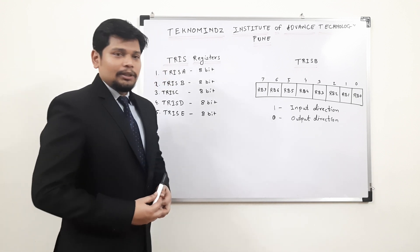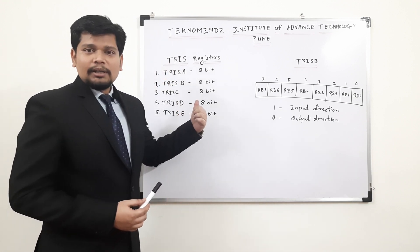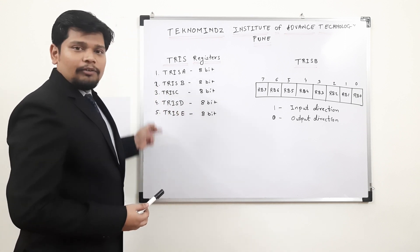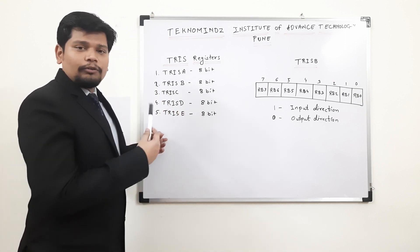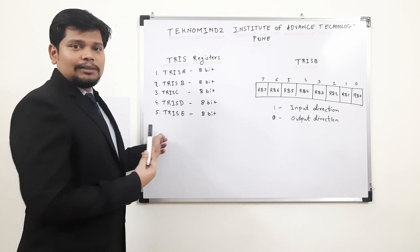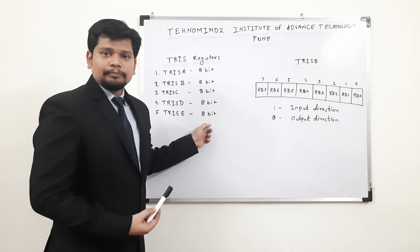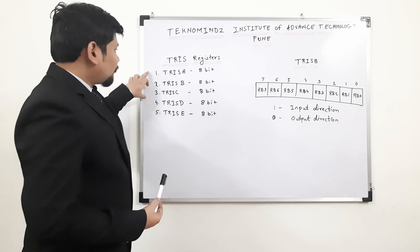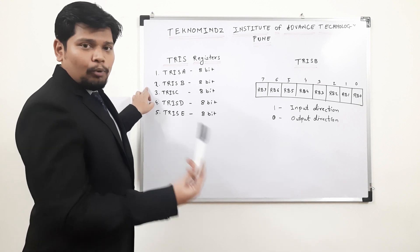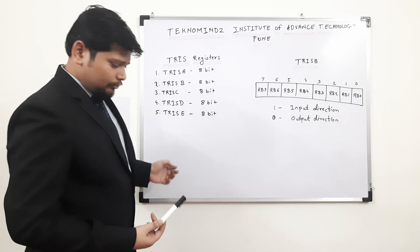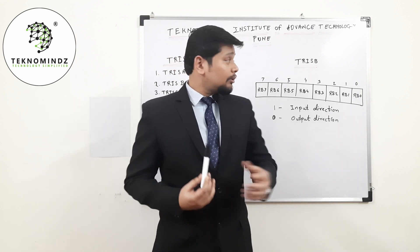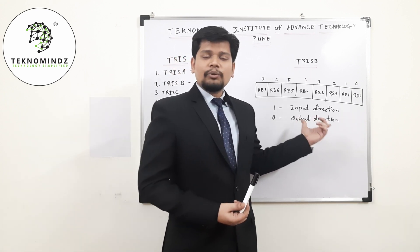The first register will be the TRIS register. As we have discussed earlier, we have 5 different ports. For the 5 different ports, you have 5 different registers, each consisting of 8 bits. TRISA will be for port A, TRISB will be for port B, and so on. The TRISA or TRISB register is 8 bits, as you can see over here.